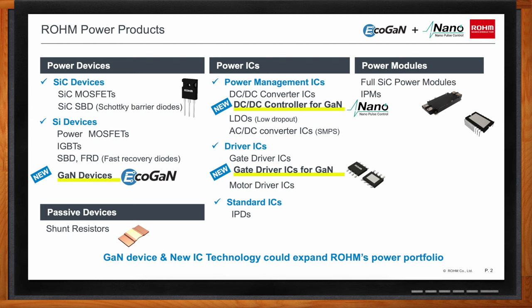By offering power devices in all three semiconductor technologies, customers can select the best technology to meet their requirements for power, voltage, current, switching frequency, and cost. Highlighted in yellow here in the middle are Rome's latest ICs in support of our GaN technology offerings — the DC-to-DC controller for GaN and the gate drivers for GaN. Throughout this talk we will be focusing on the three new GaN-related power products shown on this slide.